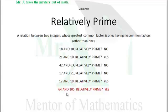How about these two guys? 64 and 105, are they relatively prime? Yes, they are. The only factors of 64 can be broken down into multiples of 2, powers of 2. 2 to the sixth power is 64, and the factors of 105 will not include any 2's. So indeed, 64 and 105 are relatively prime.